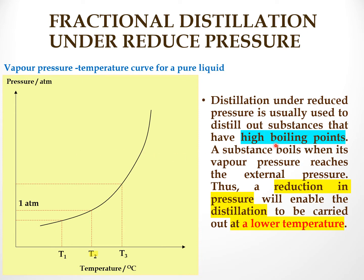When we have to distill substances that have high boiling points. A substance boils when its vapour pressure reaches the external pressure. At room conditions, when the external pressure is 1 atmosphere, the boiling point is T2. When we reduce the pressure below 1 atmosphere, we will get a lower boiling point.